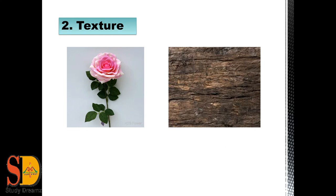The second property is texture. Texture means the feel of any material when we touch it. When we touch different materials, we find that some are smooth and some are rough. For example, if we take a flower in one hand and touch the bark of a tree with the other, we can easily differentiate the feeling of both materials. The flower feels very smooth and soft, while the bark of the tree is very rough.